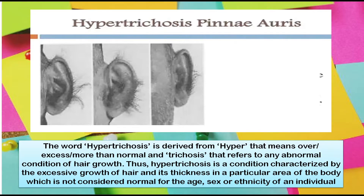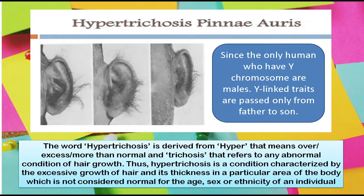Hypertrichosis is derived from 'hyper,' meaning over, excess, or more than normal, and 'trichosis,' referring to any abnormal condition of hair growth. Thus, hypertrichosis is a condition characterized by the excessive growth of hair and its thickness in a particular area of the body, which is not considered normal for the age, sex, or ethnicity of an individual. Since the only humans who have a Y chromosome are males, Y-linked traits are passed only from father to son.